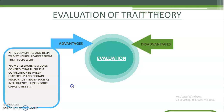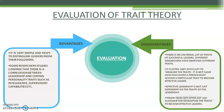Some disadvantages of trait theories include: there is no universal list of traits, as different researchers have defined different traits for successful leaders. It is also very difficult to measure traits, and it is not clear how high a score a person must achieve to become a successful leader. Effective leadership is not just dependent on traits, and the theory does not offer guidance for developing traits to become an effective leader.